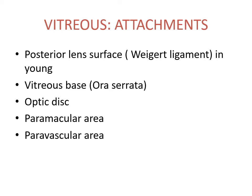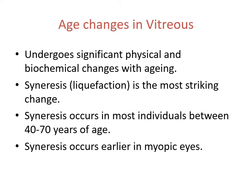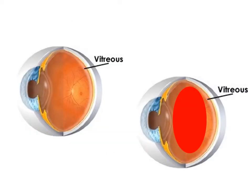The age changes which occur in the vitreous involve significant physical and biochemical changes with aging. There is something known as syneresis, which is liquefaction of the gel-like vitreous — this is the most striking change and is a normal senile change. As age progresses, this gel becomes more liquid-like. Syneresis occurs in most individuals between 40 to 70 years of age, and it occurs earlier in eyes which are myopic.